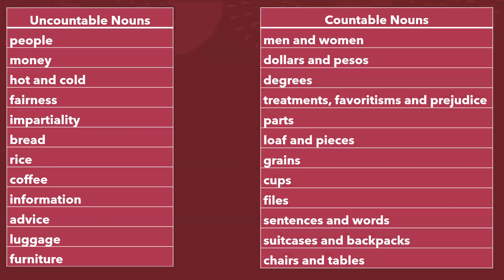Tenemos el primer ejemplo, que sería gente. La gente como tal se puede contar — people can be counted — pero para contarlos, entonces, dividimos en personas, en hombres, mujeres. Pero el concepto que no se puede contar es población: mucha población, poca población. El dinero como tal no se puede contar — es un concepto — pero podemos contar dólares y pesos.